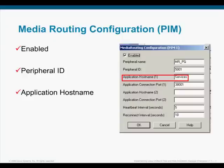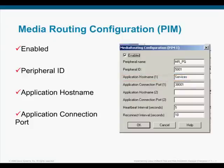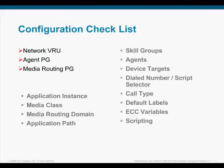For the application host name, provide the name of the server where the services process is active. The default application connection port is 38001. After filling in this value, go ahead and click OK. That will complete the PIM configuration, and then continue through the installation as you would any other PG.